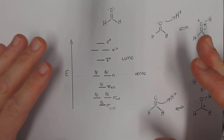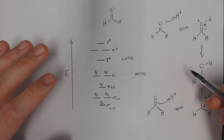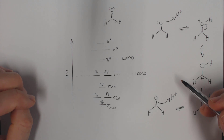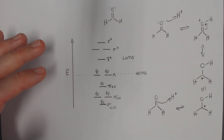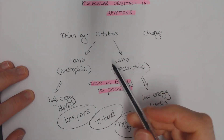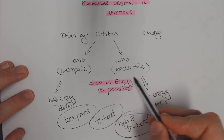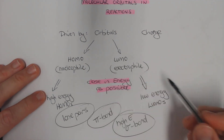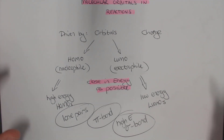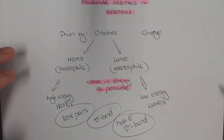Molecular orbitals is a very interesting section, and you can go into a lot of depth. At the second-year level, we're treating it very simplistically. The key things to take home are: reactions are orbital-driven; the highest occupied molecular orbital equates to the nucleophile, and a high-energy HOMO makes a good nucleophile; the LUMO is the electrophilic part of the molecule, and low-energy LUMOs make good electrophiles. Whatever raises the energy of a HOMO makes a better nucleophile; whatever lowers the energy of a LUMO makes a better electrophile.